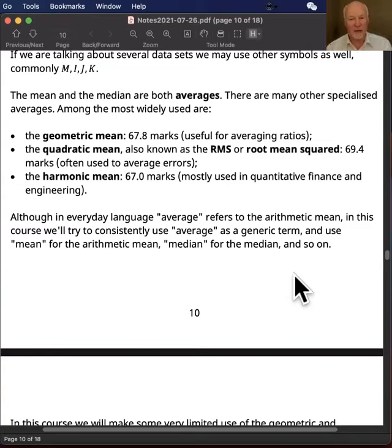that turns up in quantitative finance and certain engineering applications. So although in everyday language we use the word 'average' to refer to the arithmetic mean, in this course we're going to try to consistently use 'average' as a generic term and use 'mean' for the arithmetic mean and 'median' for the median.